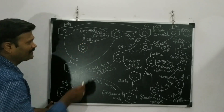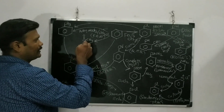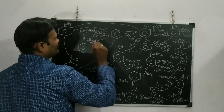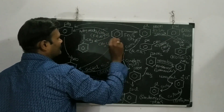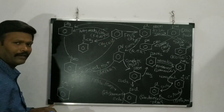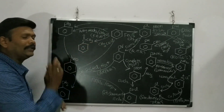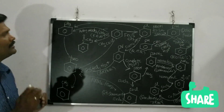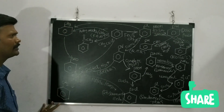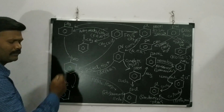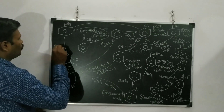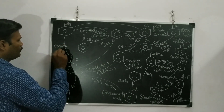To convert benzene to acetophenone (a ketone with an acetyl group), instead of CH3Cl we use CH3COCl with anhydrous AlCl3. This gives acetophenone as the product — this is Friedel-Crafts acylation. To convert the CH3 group of toluene to a CHO group (benzaldehyde), we use chromyl chloride (CrO2Cl2) followed by hydrolysis — this is the Etard reaction.